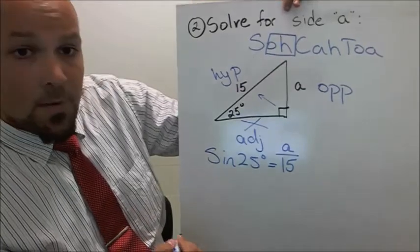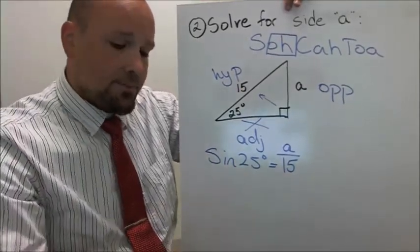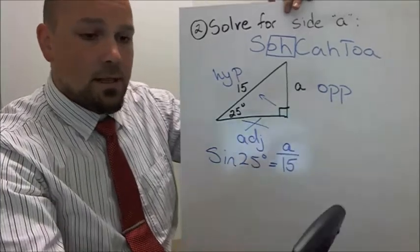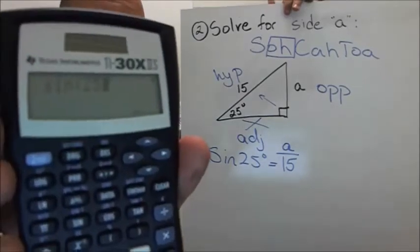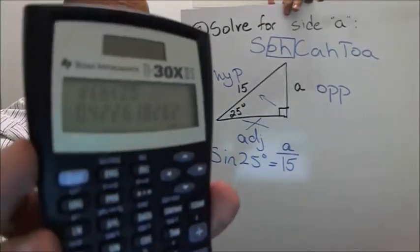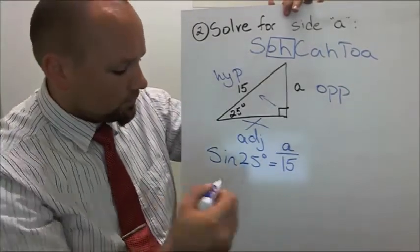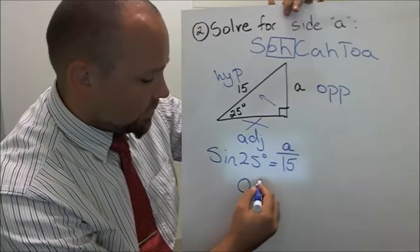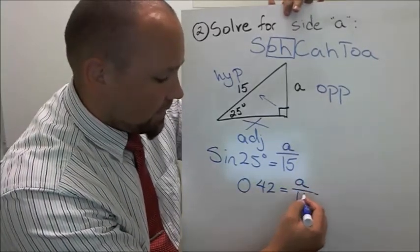So now all I need to do is use my calculator and find out what sine 25 is. So I'm going to take the calculator, and I'm going to put in sine 25. So there's sine 25, put in equals, and I get the answer 0.42.